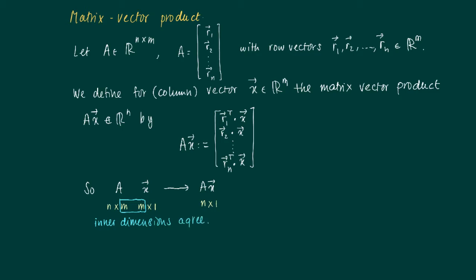A should have just as much columns as x has components so that we can actually make these inner products over here.